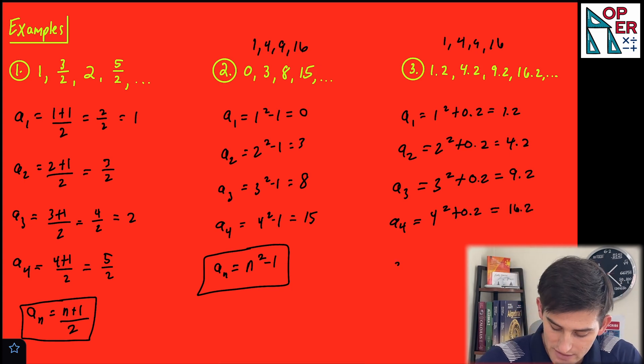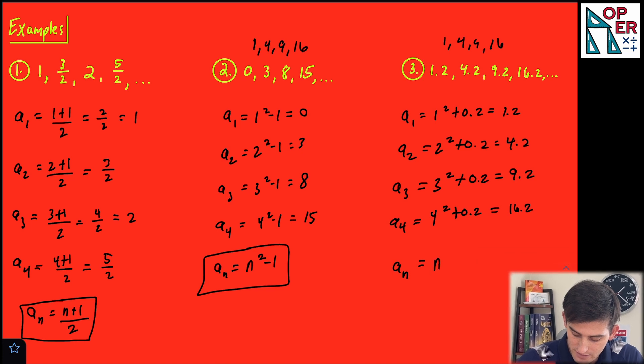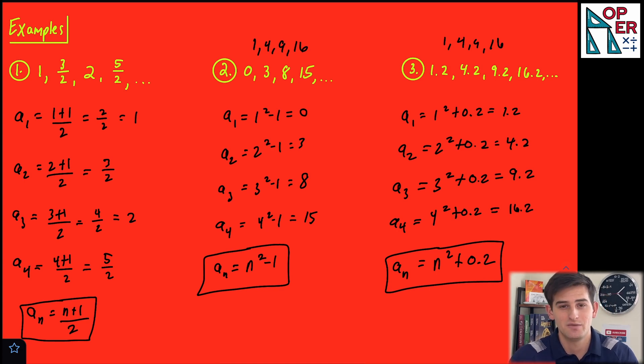So now for our nth term, we could say a sub n is equal to n squared plus 0.2. So that's how when we have a recognizable pattern in our sequence, we can write a rule for that sequence.